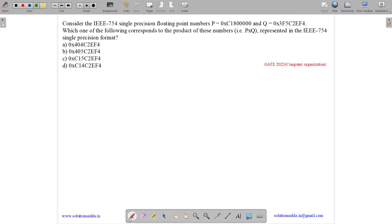This question belongs to computer organization subject and was asked in GATE CSE 2023. The question states: consider the IEEE 754 single precision floating point numbers P = 0xC1800000 and Q = 0x3F5C2EF4. Which one of the following corresponds to the product of these numbers, P×Q, represented in the IEEE 754 single precision format?